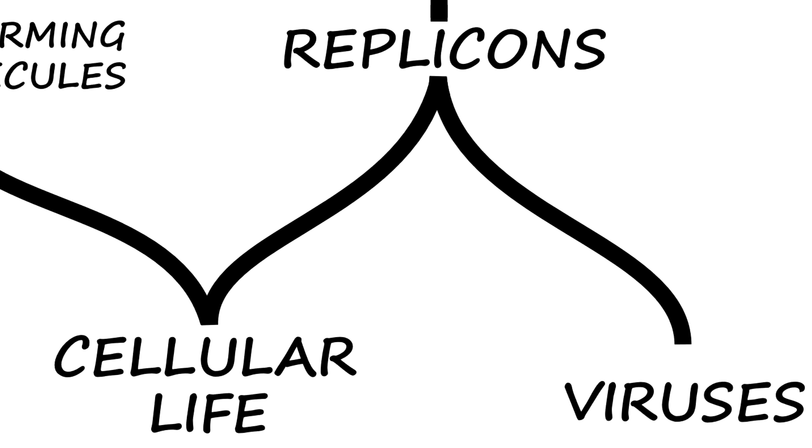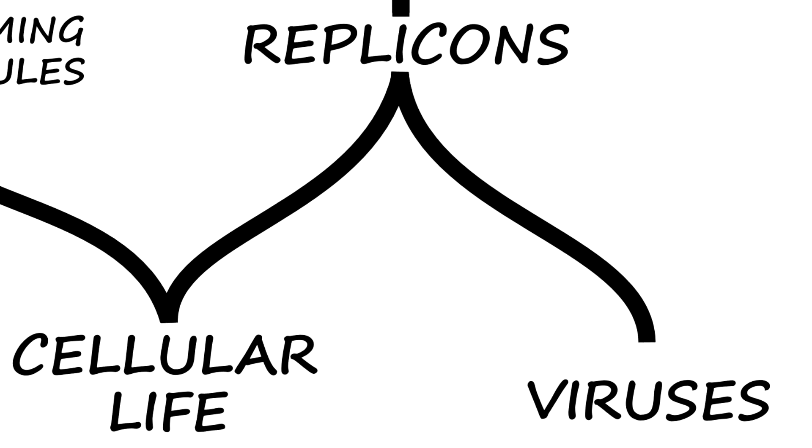And the others, further away from the food source, found a way to enter these already formed cells, using them to multiply and then leaving the cell in search for the next one. So these gave rise to viruses.